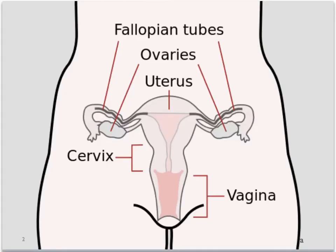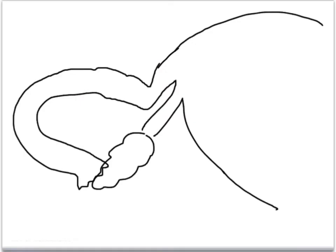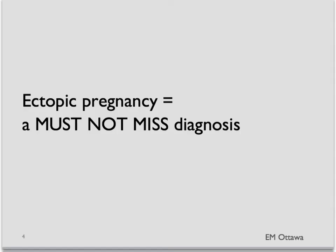Ectopic pregnancy refers to any pregnancy that is implanted outside the uterus. Most of these will be in the fallopian tubes. As you can see, there is limited space in the fallopian tube, and as the pregnancy keeps growing, at some point it ruptures. The patient then bleeds into the pelvis and can quickly lose a lot of blood. Because of that, ectopic pregnancy is a cannot-miss diagnosis in the emergency department.